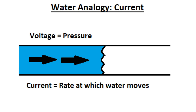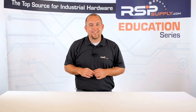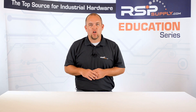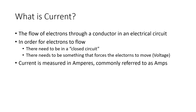When both of these requirements are met, you will see the electrons move through a circuit. How fast the electrons move, or the amount of current, is dependent on the amount of voltage that is present. Current is measured in amperes, commonly referred to as amps. In electrical equations, current is represented as the letter I.